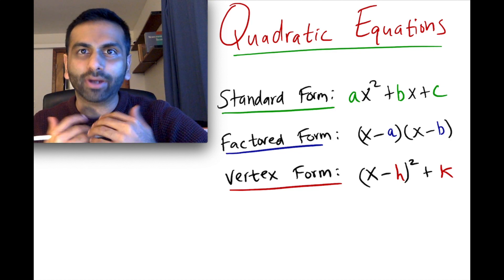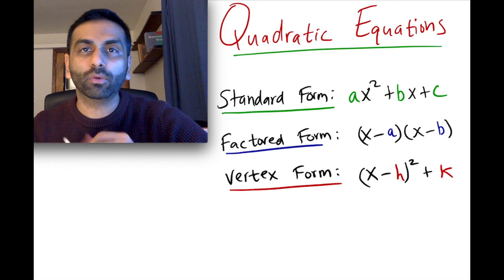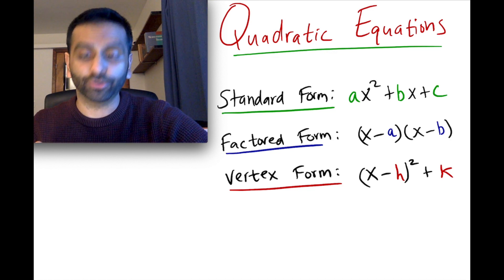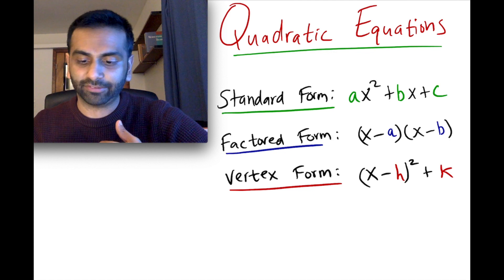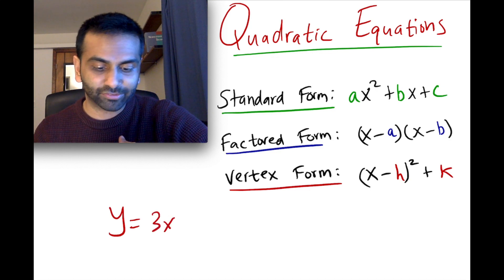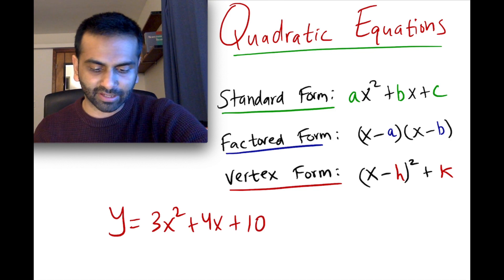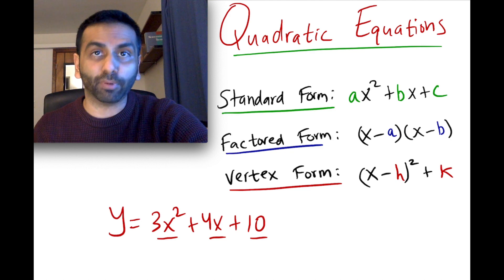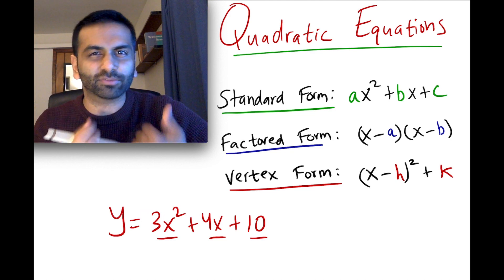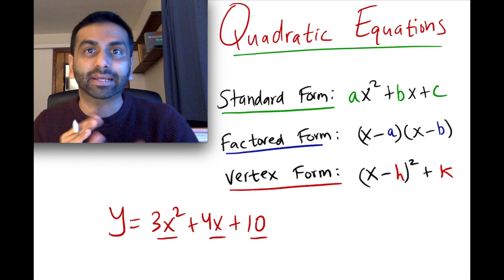In this video, we're going to talk about quadratic equations. Quadratic equations are polynomials where your variable has the highest degree of 2. An example of a quadratic equation is y equals 4x squared plus 4x plus 10. Notice that the highest exponent on your variable x is 2, and that's what makes it quadratic. When you graph it out, that graph is called a parabola.